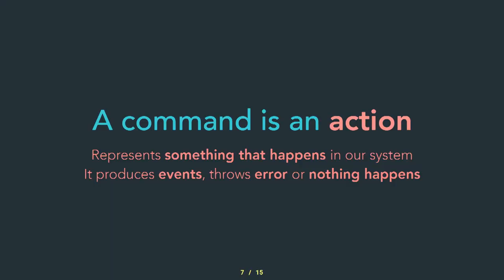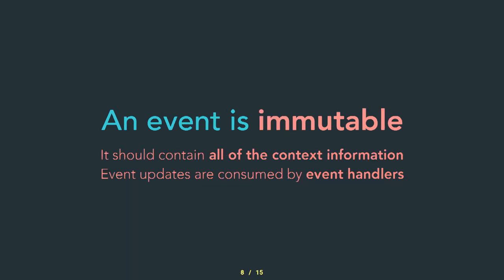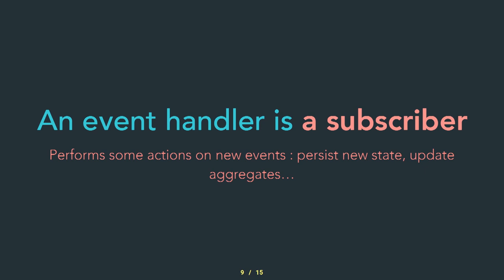There are four types of things in event sourcing. First is a command, which is an action — it represents a thing that happens in the system. It produces events, errors, or nothing happens. Second is an event, which is immutable — it means the event is raw and pure. It should contain all the information and does not derive from other information. It's like pure data.